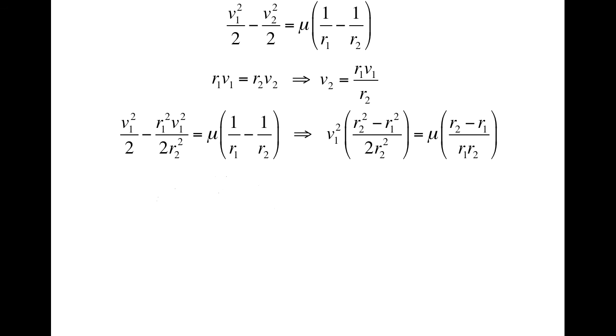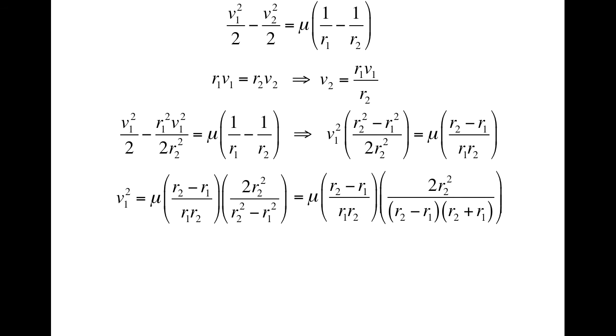Remember when you divide by a fraction you multiply by the reciprocal, so I end up with this. Now I want to draw your attention to the denominator of the second fraction, the r2 squared minus r1 squared. This is an example of a difference of squares, which can be factored into r2 minus r1 times r2 plus r1. Notice that there is another r2 minus r1 in the numerator of the first fraction. These two factors can be divided out and removed. In addition, the r2 in the denominator of the first fraction can be divided out with one of the r2s in the numerator of the second fraction.